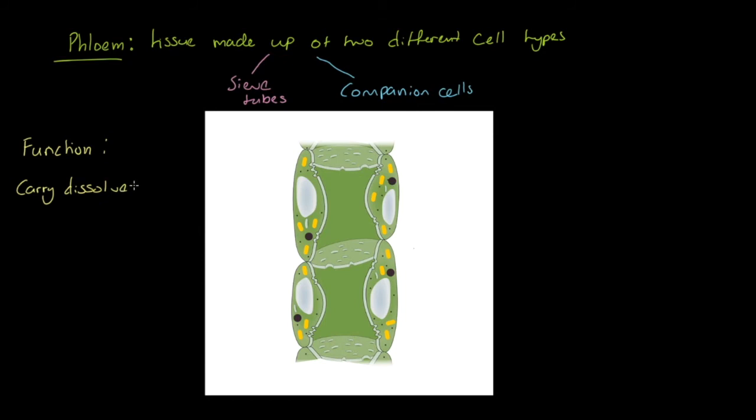It carries dissolved sugars up and down the plant. Notice the difference therefore between phloem and xylem. Xylem only carries water up the plant. Our phloem can carry up and down these dissolved sugars.